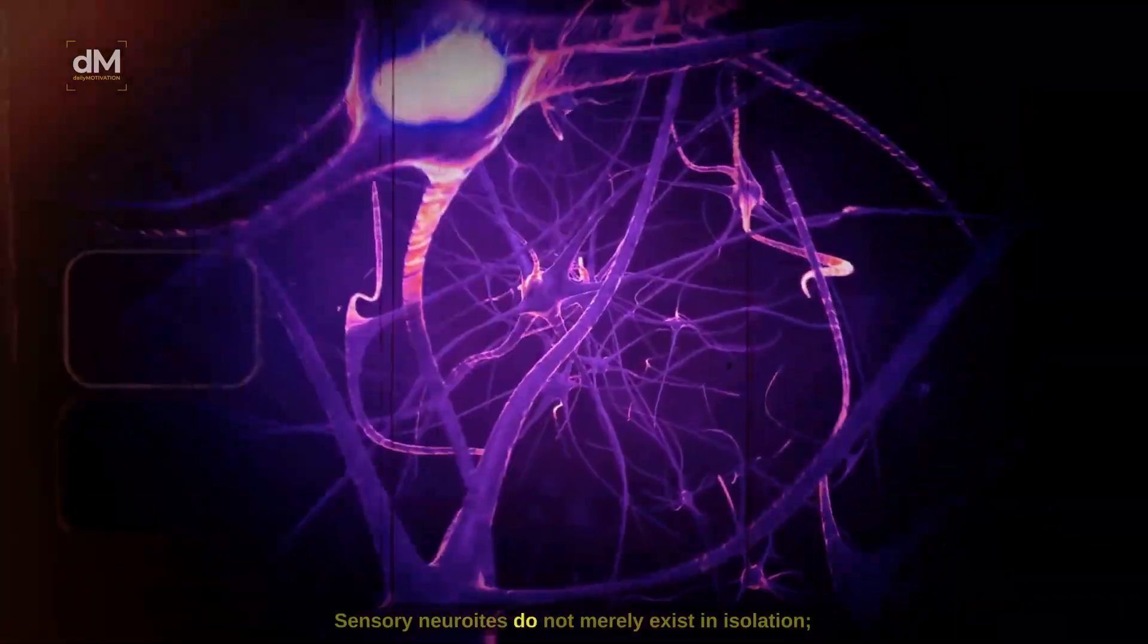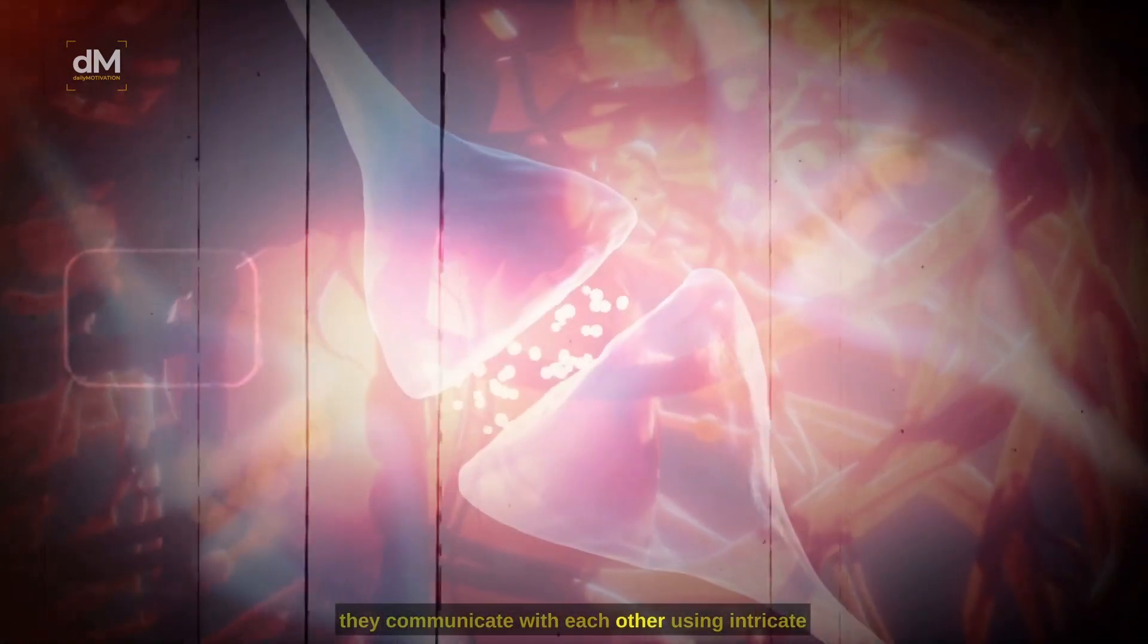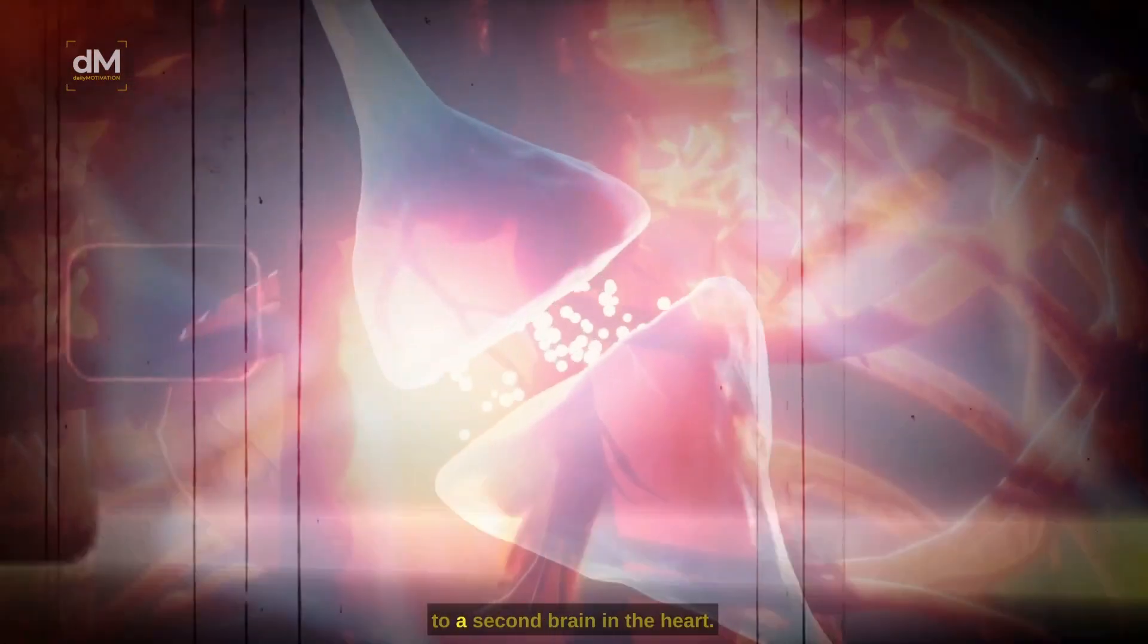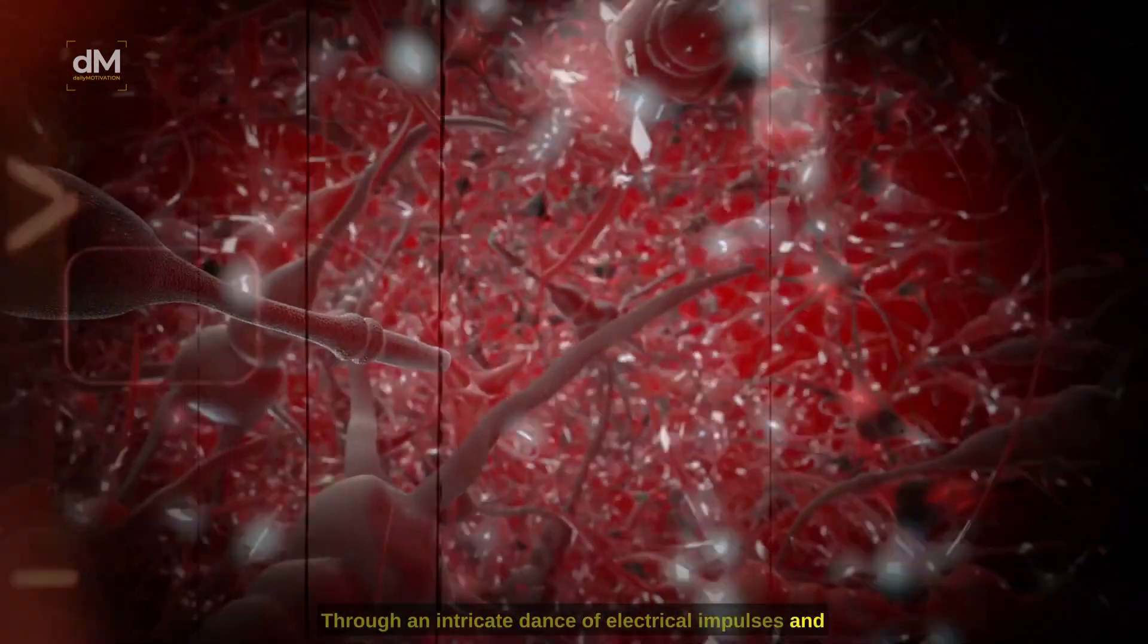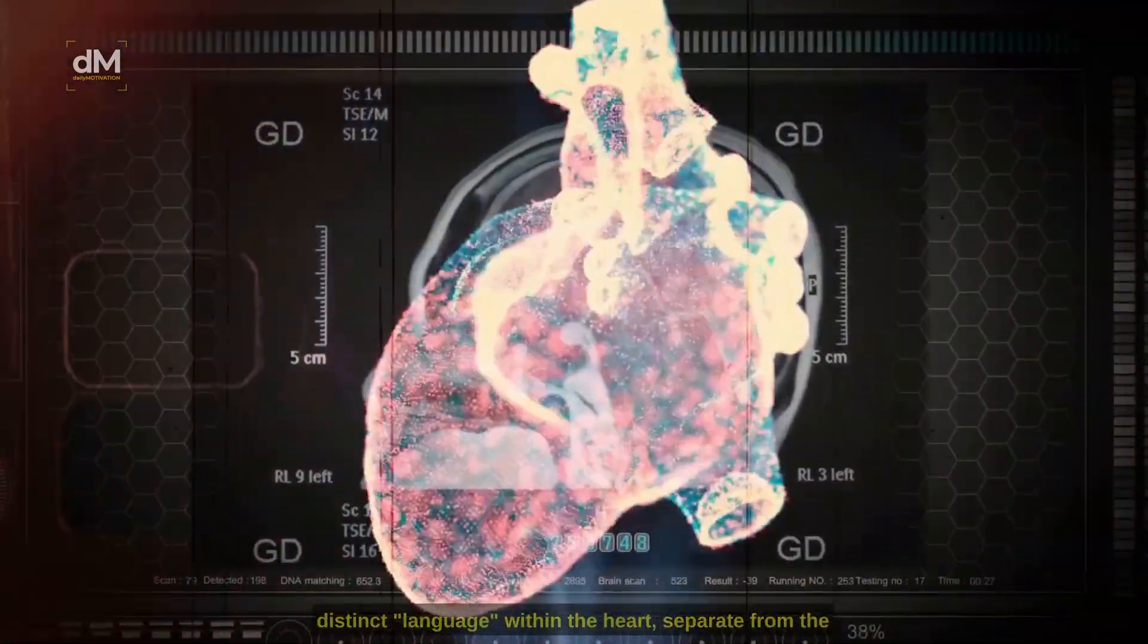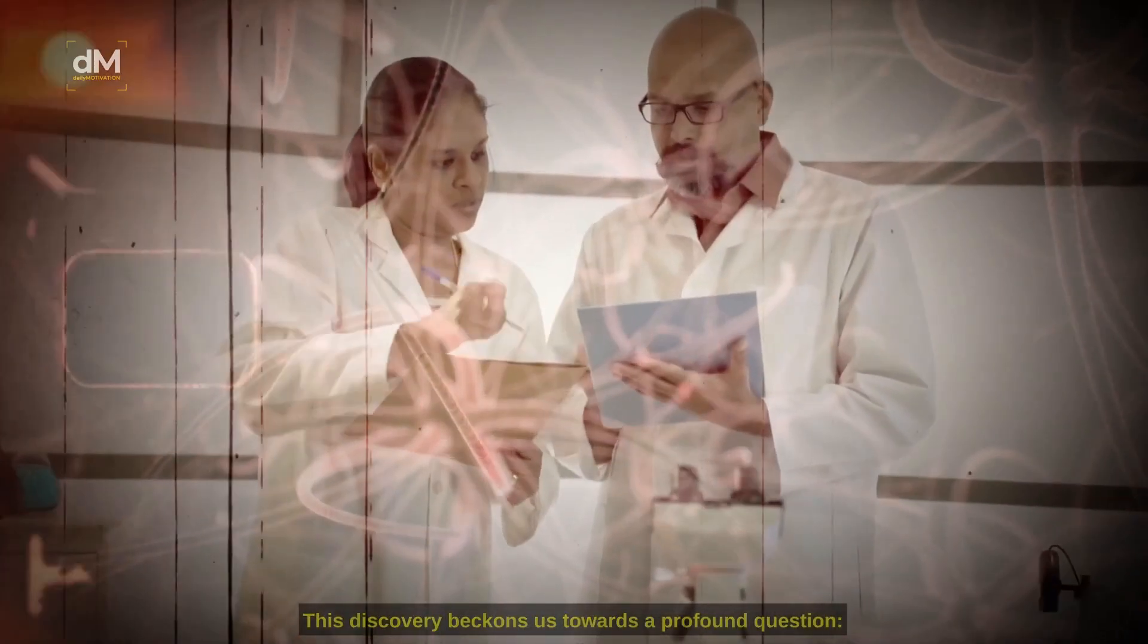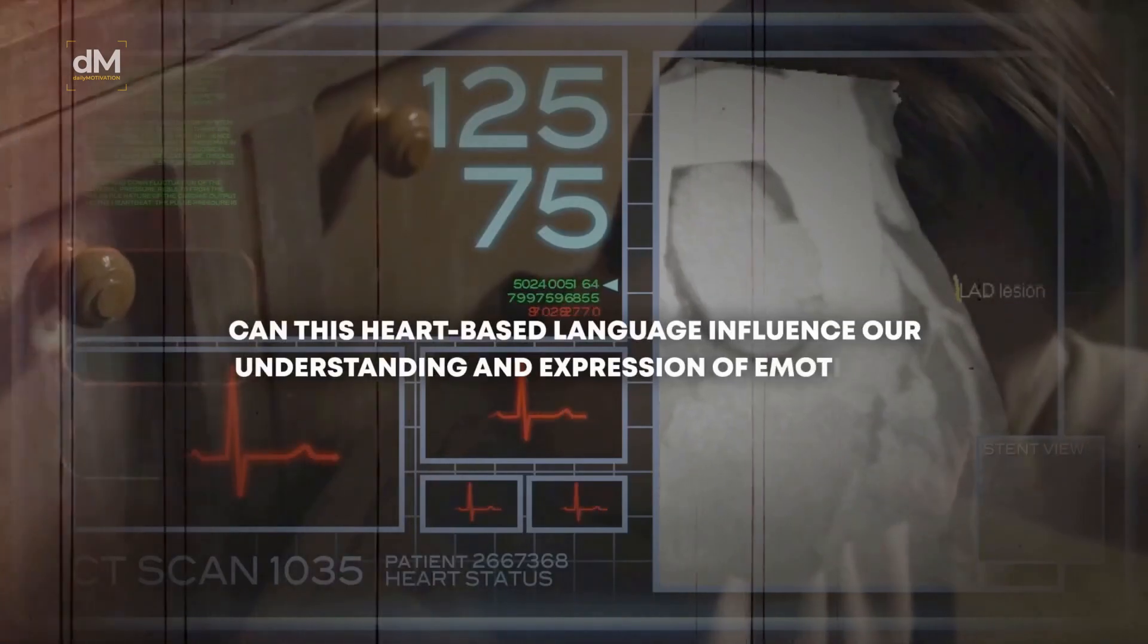Sensory neuroites do not merely exist in isolation. They communicate with each other using intricate biochemical signals, forming a complex network akin to a second brain in the heart. Through an intricate dance of electrical impulses and chemical cascades, these cells give rise to a distinct language within the heart, separate from the linguistic mechanisms of the cranial brain. This discovery beckons us towards a profound question: Can this heart-based language influence our understanding and expression of emotions?